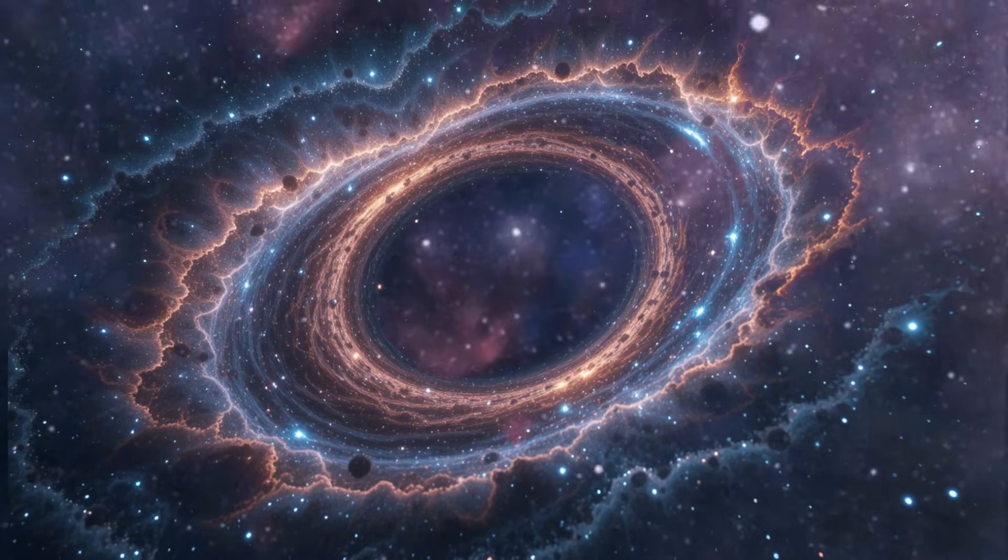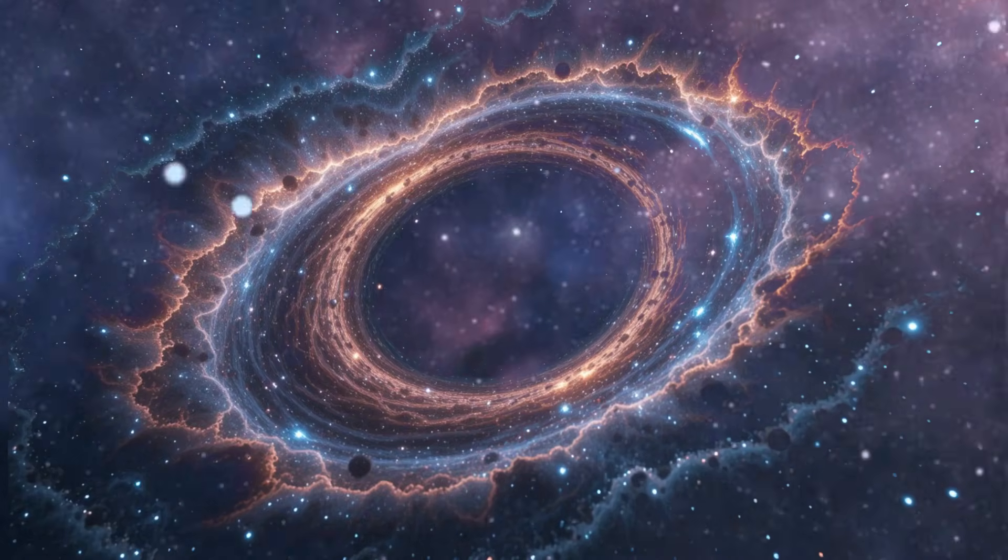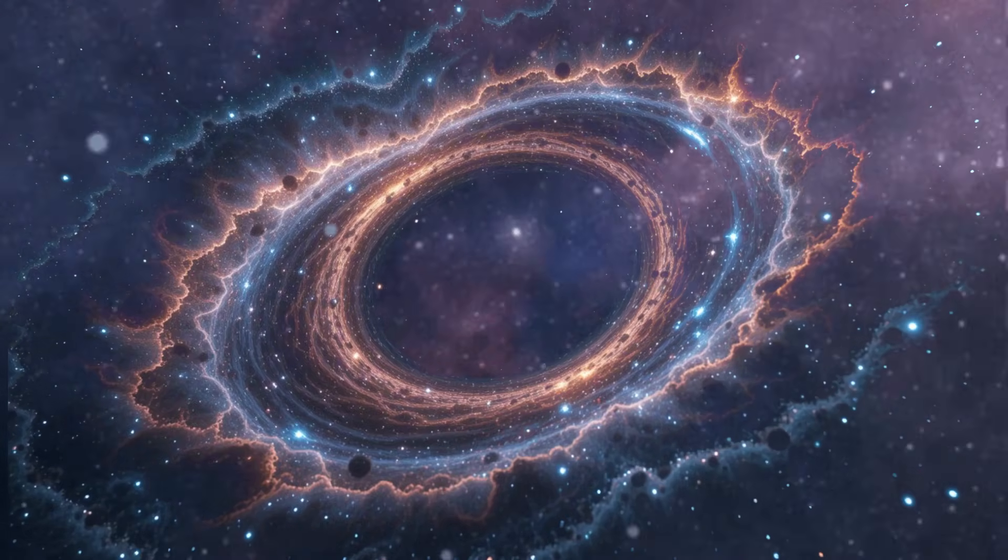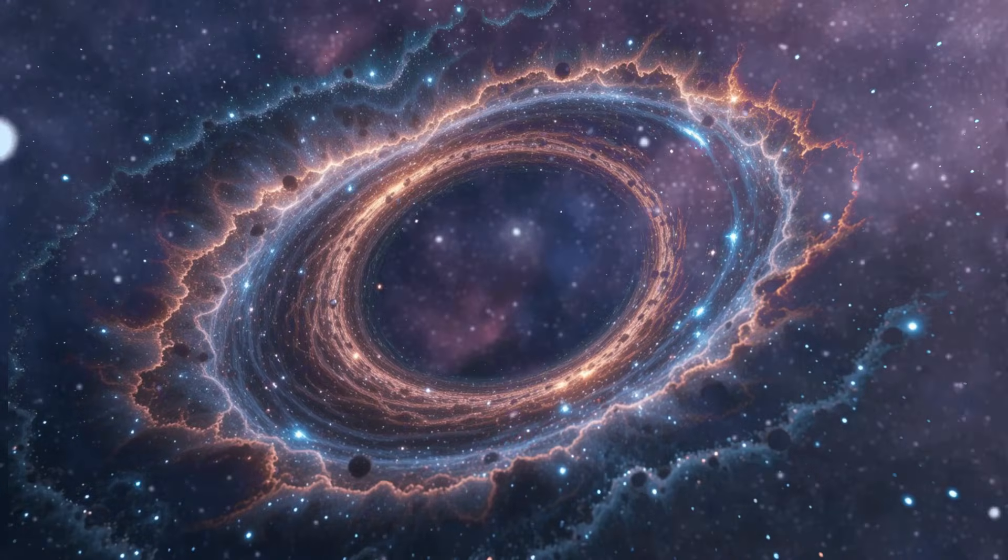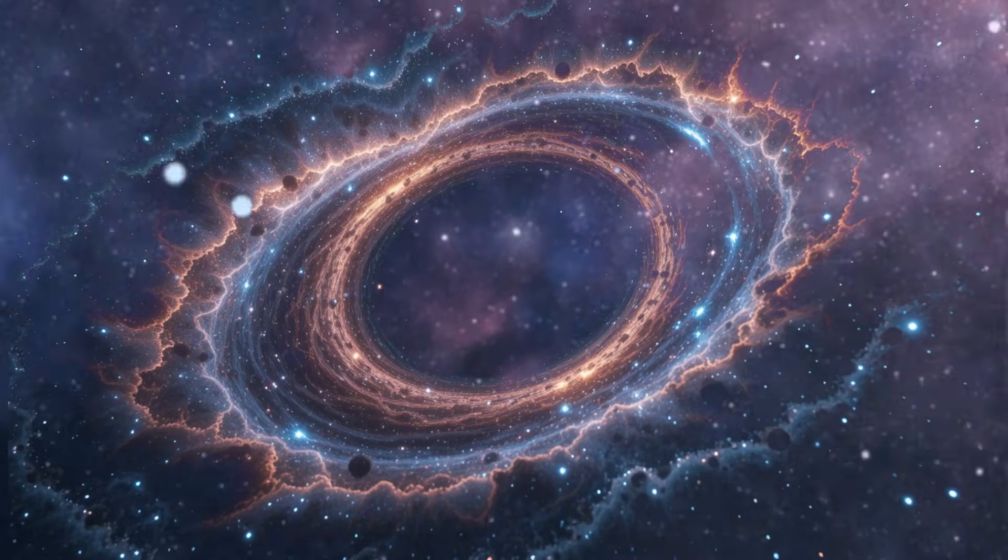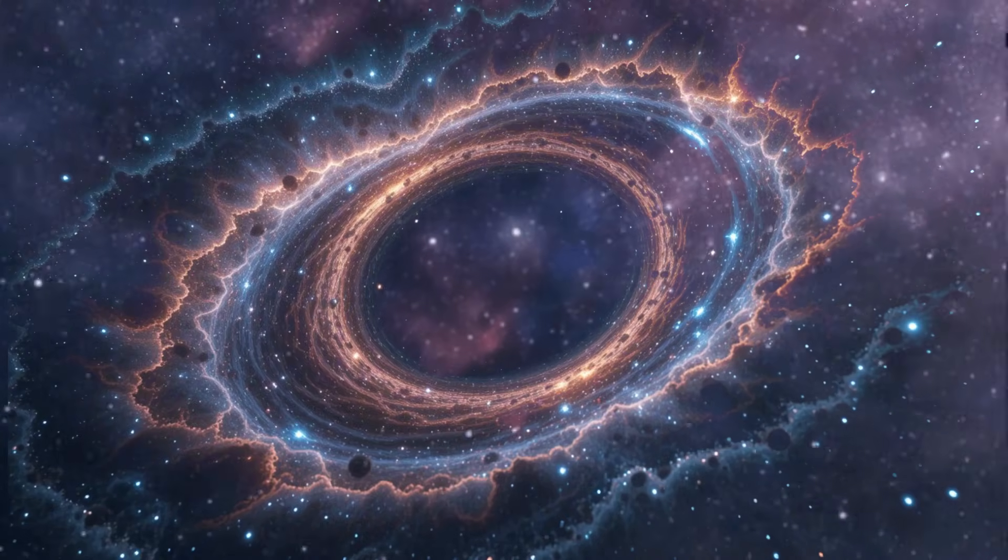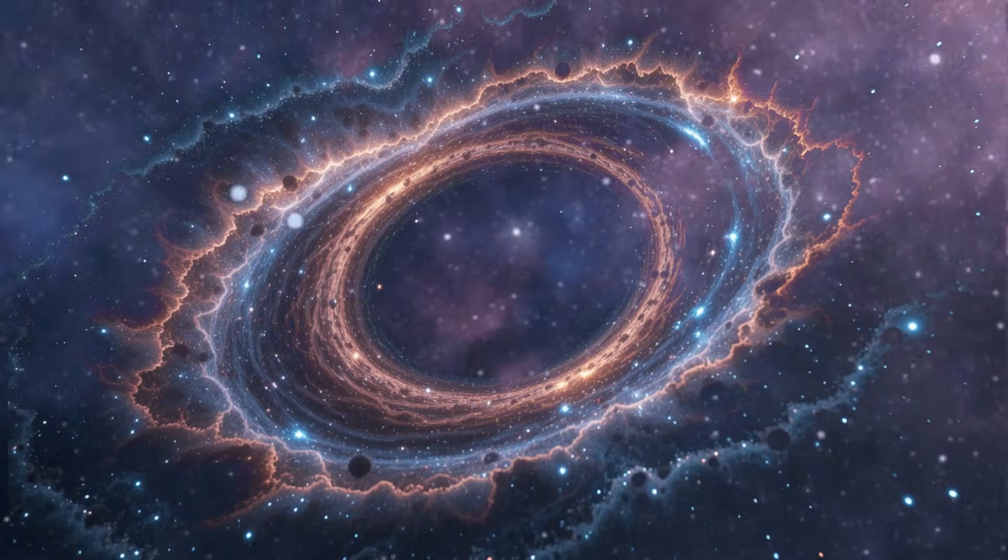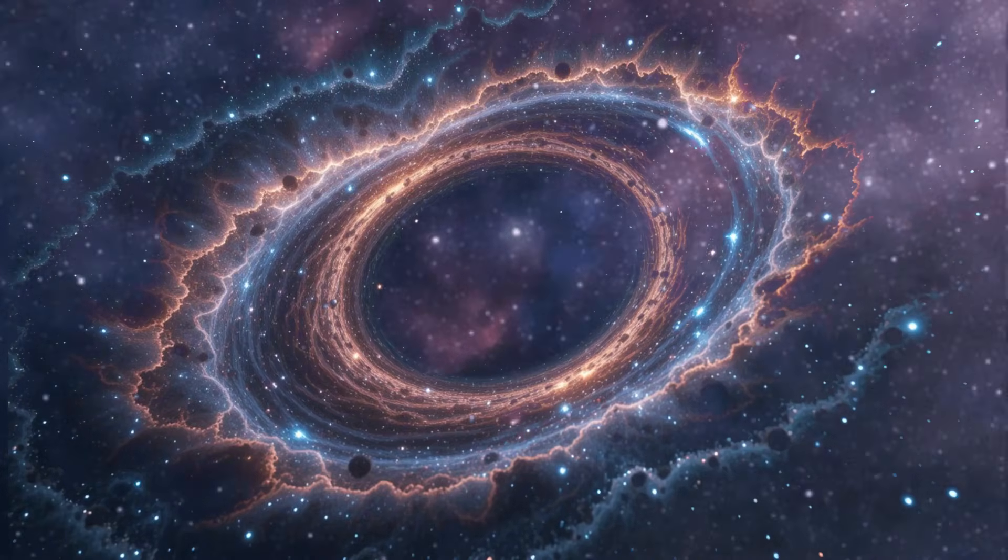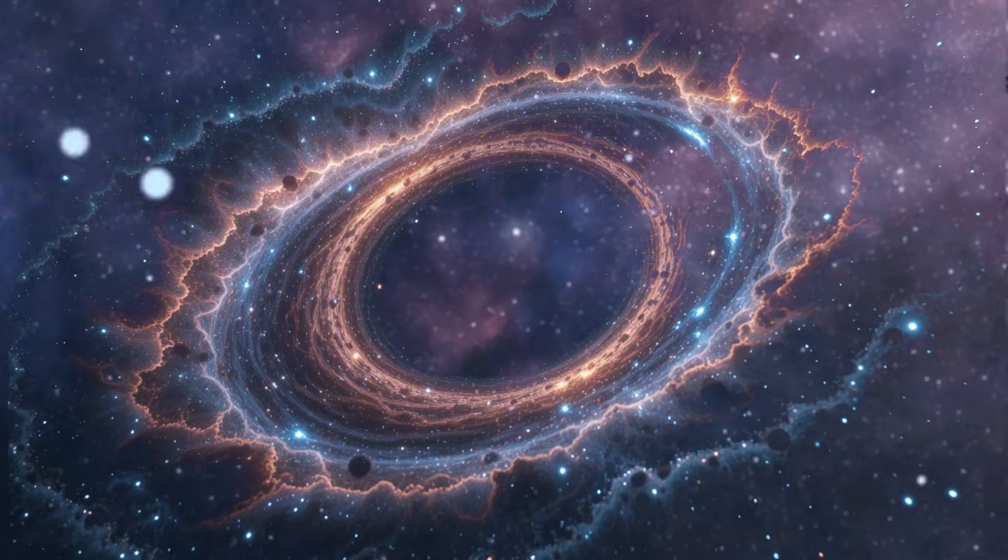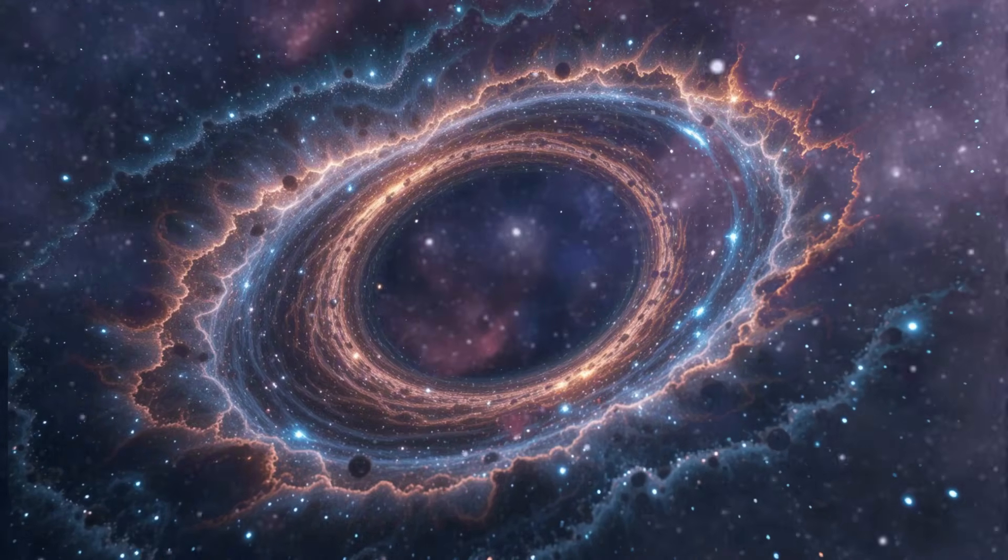Red supergiants like Betelgeuse are crucial to our understanding of stellar evolution. These stars represent the final stage of a massive star's life before it explodes in a supernova. Their immense size and relatively short lifespans make them ideal subjects for studying the processes that lead to a star's death. Furthermore, the energy released by these stars during their final stages contributes to the formation of heavy elements, which are essential for creating planets and life as we know it.